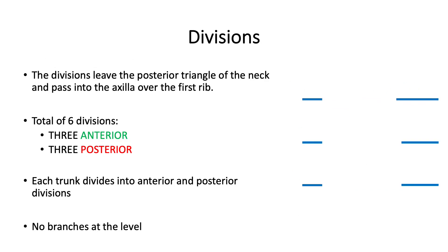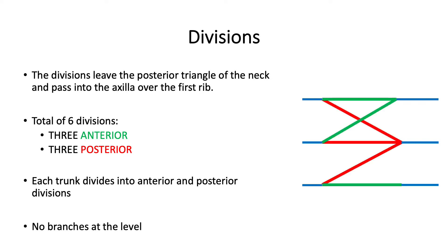The next part of the brachial plexus is known as the divisions. They are formed as the brachial plexus leaves the posterior triangle of the neck to pass into the axilla over the first rib. There are six divisions in total — three anterior and three posterior. Anterior and posterior to what? There is no specific structure they're related to; it's just the course they run in. Each trunk divides into an anterior and posterior division, and there are no branches at this level.